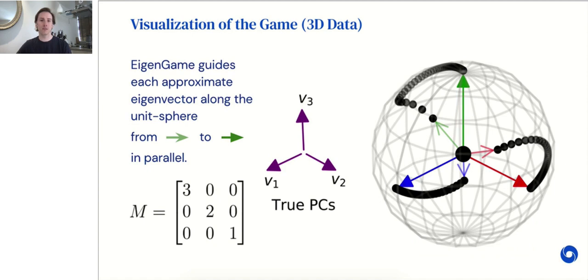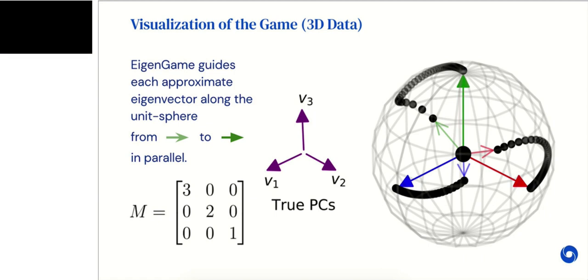To recap, to solve PCA using this game-theoretic perspective, each player, in parallel, initializes their vector randomly on the sphere and maximizes their utility, eventually arriving at the Nash equilibrium, which is also the top-K PCA solution. I'll now pass to Brian for the latter half of the talk to cover related work and experiments. Thank you, Ian.